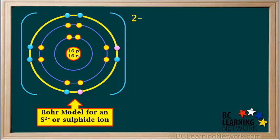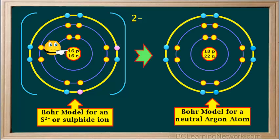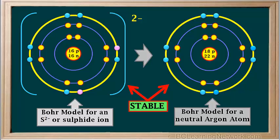When non-metal atoms form negative ions or anions, their name changes so that it ends in the letters -ide. So a sulfur atom becomes a sulfide ion. Notice that a sulfide ion has the same electron arrangement as a neutral atom of the noble gas argon. But you can easily tell the difference because the sulfide ion has 16 protons and 18 electrons, whereas a neutral argon atom has 18 protons and 18 electrons. A sulfur atom readily gains 2 electrons to form a sulfide ion because a sulfide ion has the same stable electron arrangement as an atom of the noble gas argon. Atoms tend to form ions in order to achieve noble gas stability.